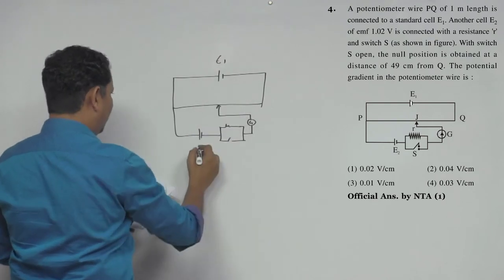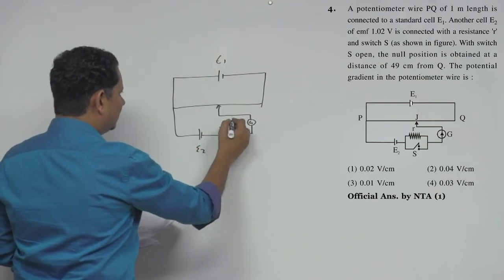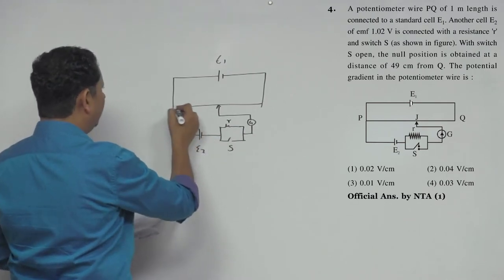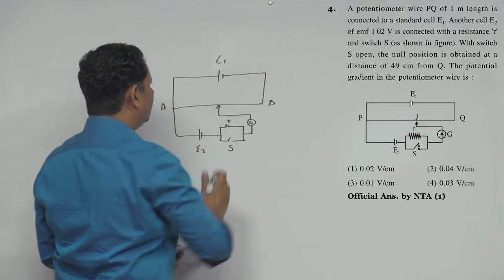Let's say this is your E1 battery, this is your E2 battery, this is your resistance R, and the switch is connected this way. This is your wire, the potentiometer wire.